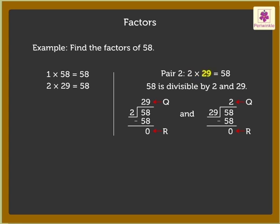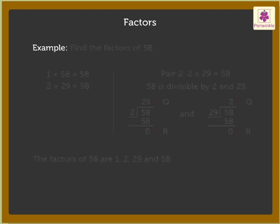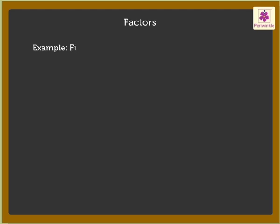The second pair of numbers which gives the product 58 is 2 times 29. Thus the factors of 58 are 1, 2, 29, and 58.